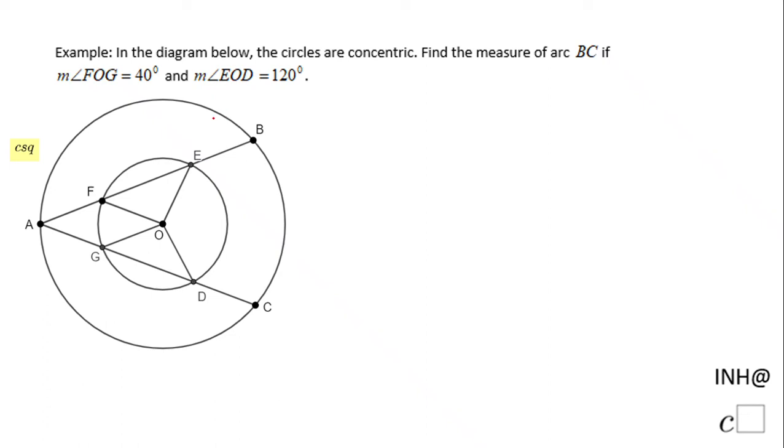Welcome or come back and I need help at C square. In this example we have two concentric circles, the big one and a smaller one, and we need to find the measure of arc BC, which is this arc right here on the large circle. If the measure of angle FOG, which is this angle, is 40 degrees, and the measure of angle EOD, this one here, is 120 degrees.